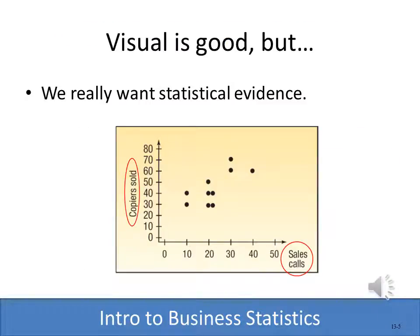Using a scatter diagram is great, and we can visually see that there probably is indeed a correlation between the number of copiers sold and the number of sales calls made. But what we'd really like is some statistical evidence. We'd like to know how strong the correlation is, and if we're actually able to predict the number of copiers we're going to sell based on the number of sales calls. So we're going to work with a correlation coefficient and develop a regression equation.